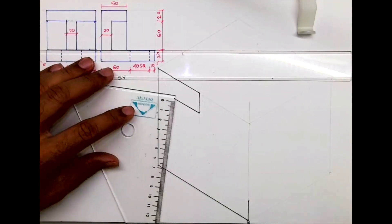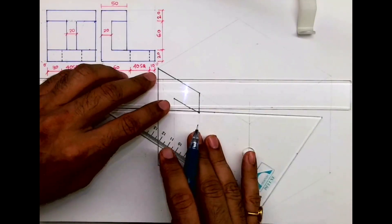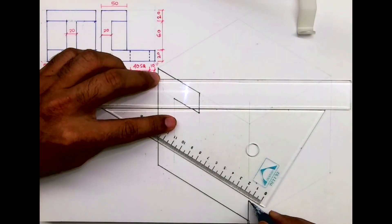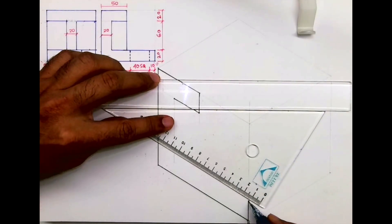Now after that, draw a vertical line and from here extend the line to get the C part.